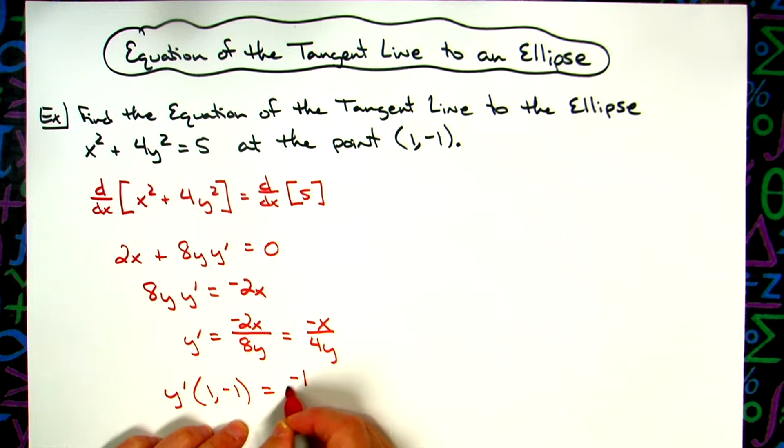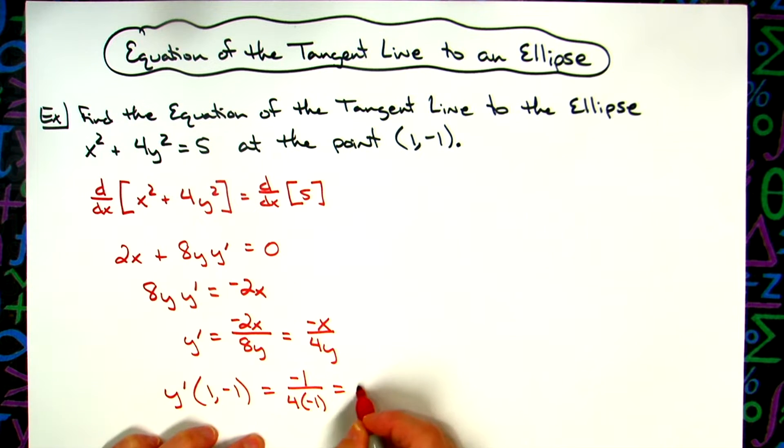We'll have a negative 1 on top and then a 4. Plugging in that negative 1, negative divided by negative is positive, which gives me a positive 1/4 for my slope.